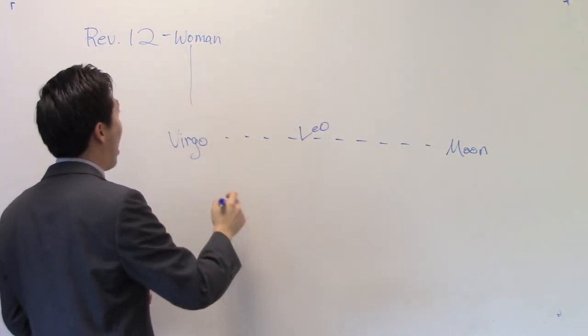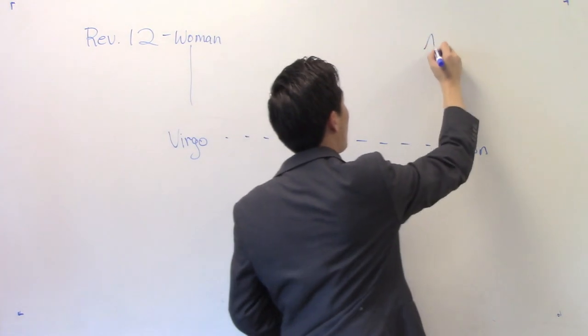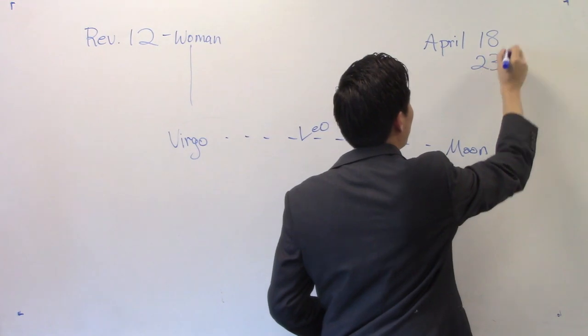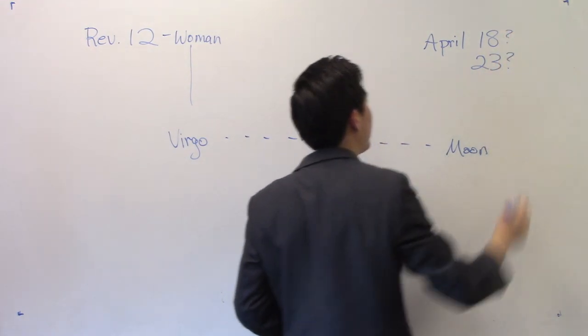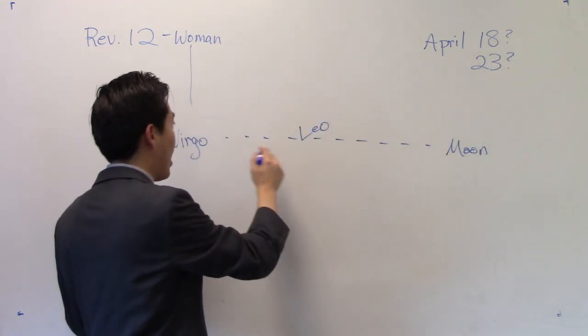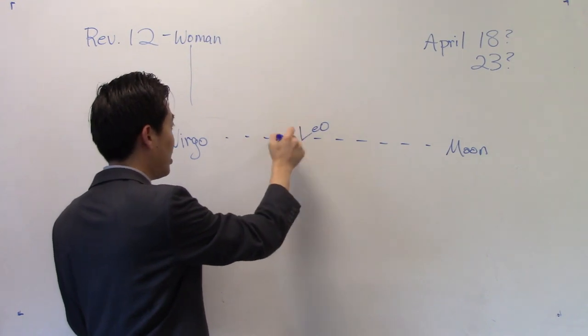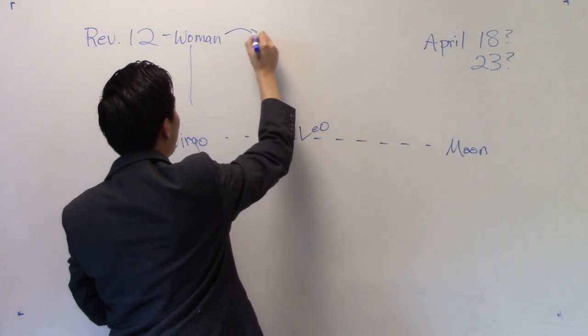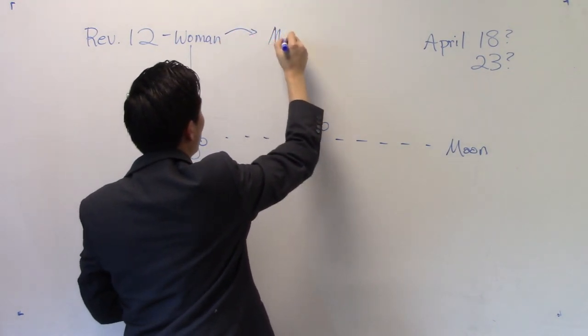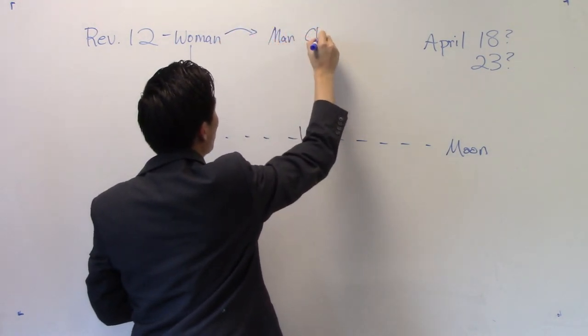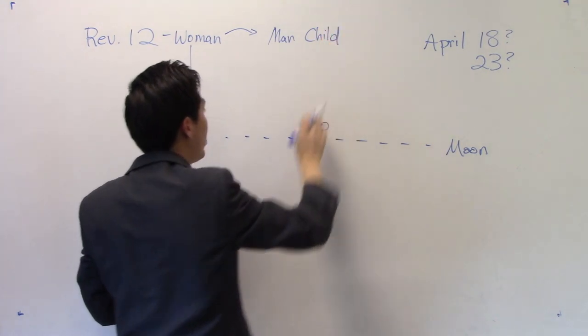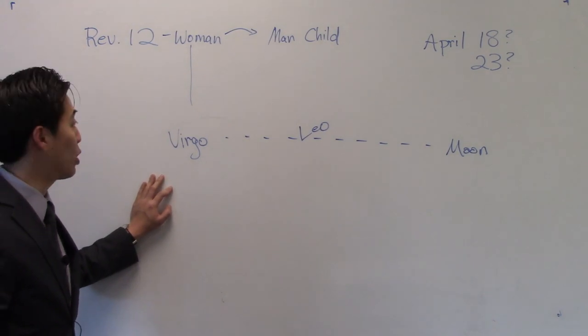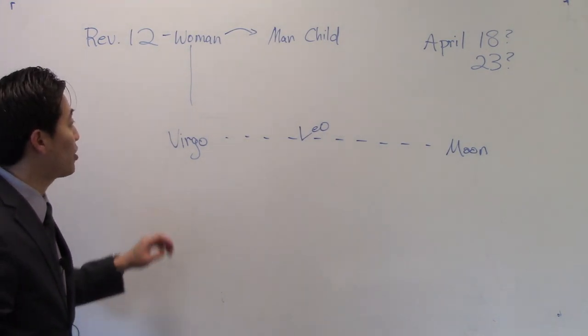So it's supposed to happen April 18th or 23rd. I think I'm leaning toward 18th, but whatever. But point is, is that in one of these days, that this Leo is going to come out of Virgo. Because the woman is giving birth to a man-child, right? The Bible says. And this is occurring during the tribulation, right? So this is like a timing to show that the rapture should be really soon. And that the tribulation is going to start. So that's what they say.